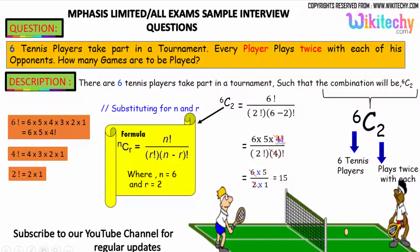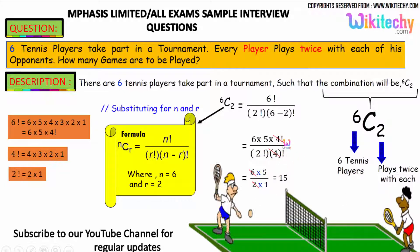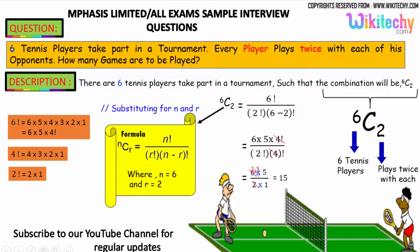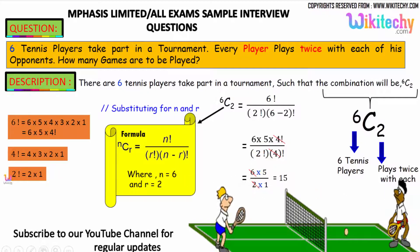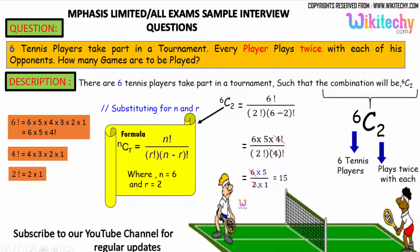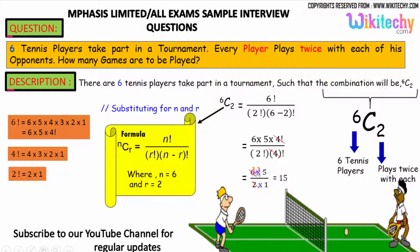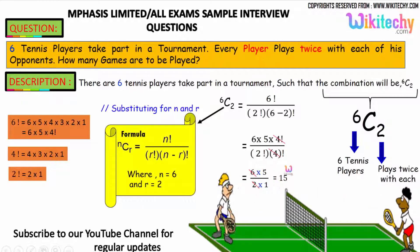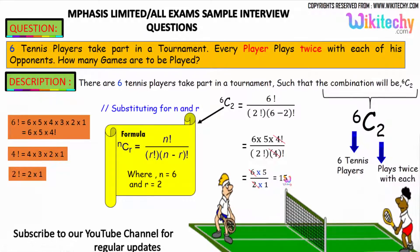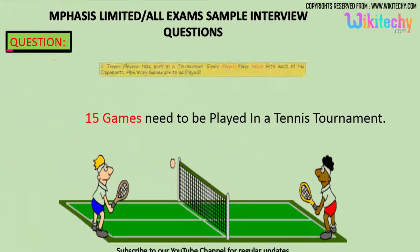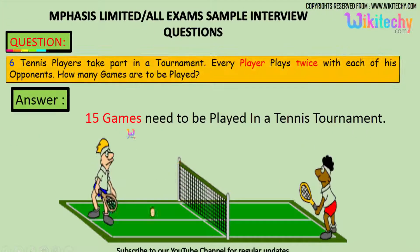Over here, these two got cancelled. We got 6 into 5 divided by 2 into 1. We got the answer as 15 — 3 into 5 is 15. So, the number of games to be played is 15 games.